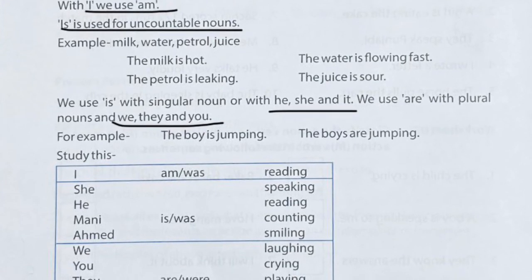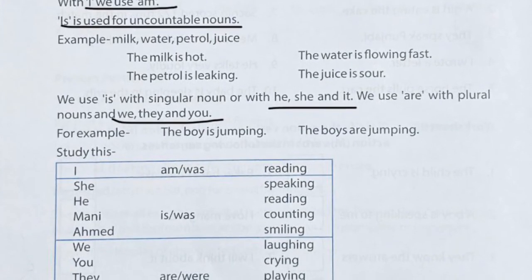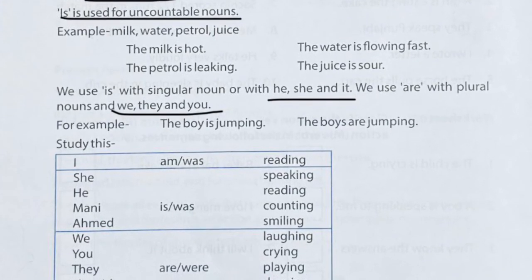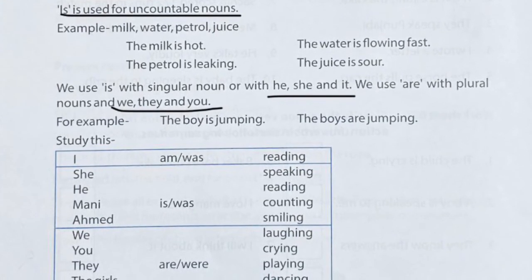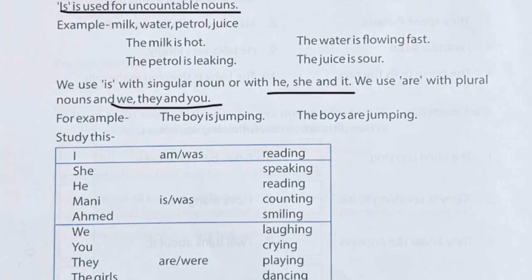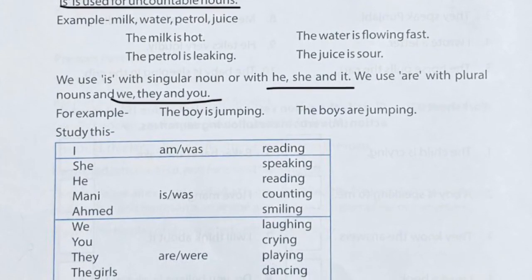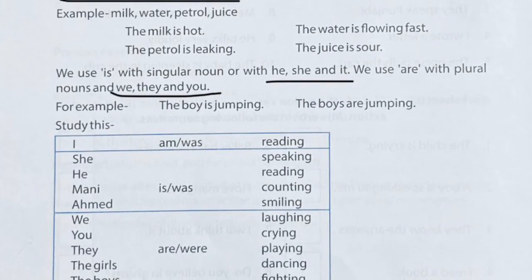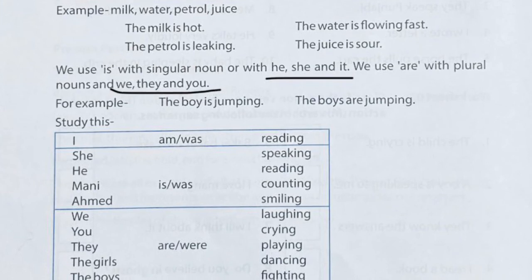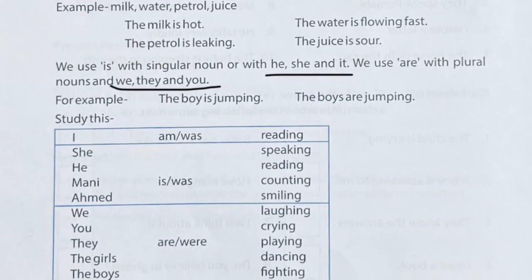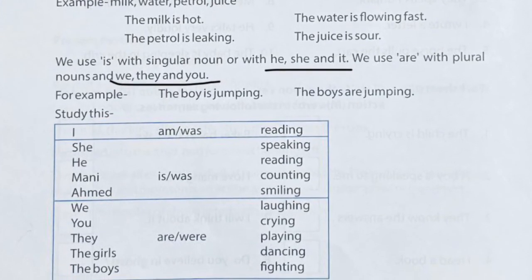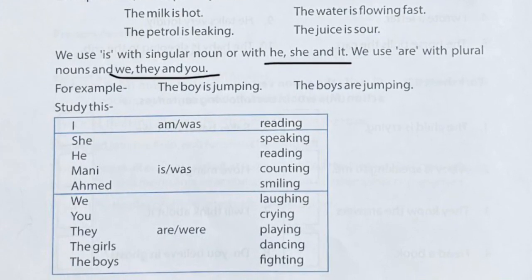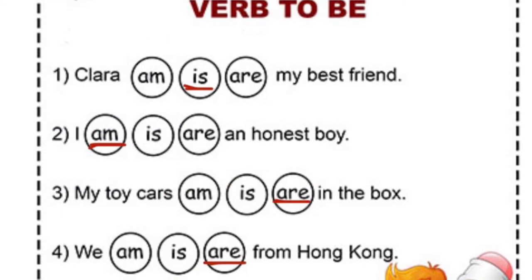One more important point: 'is' is also used for uncountable nouns. For example: 'The milk is hot,' 'The petrol is leaking,' 'The water is flowing fast,' 'The juice is sour.' So with uncountable nouns, we use 'is.'